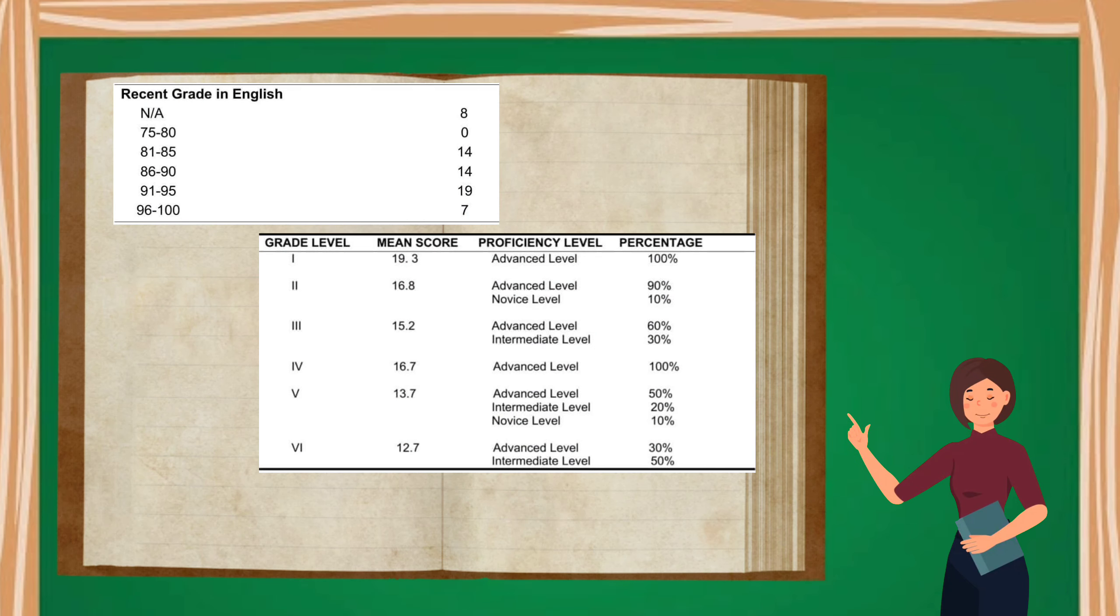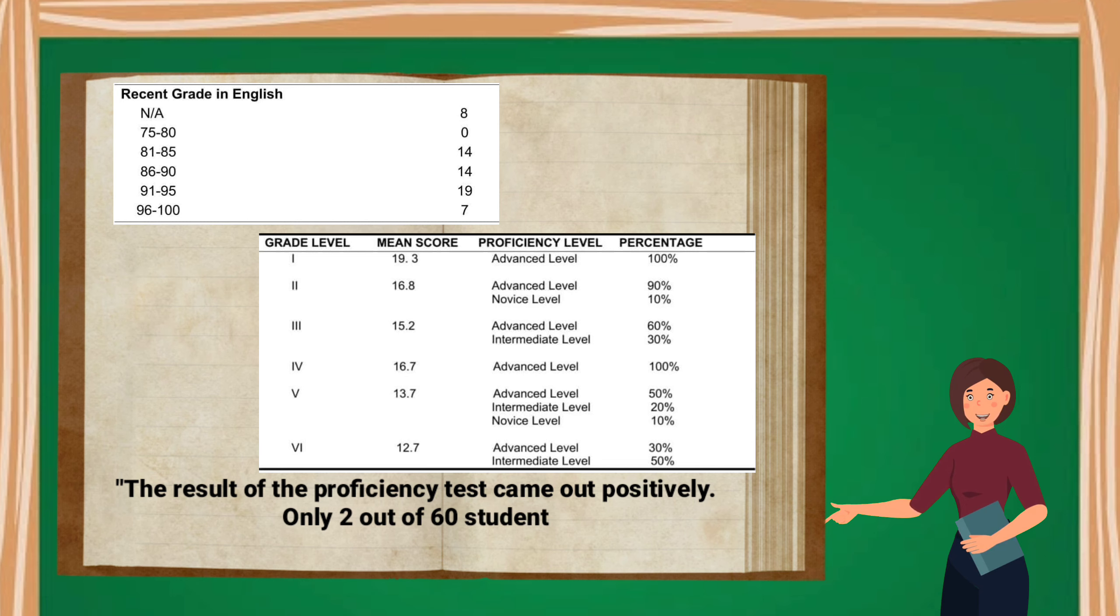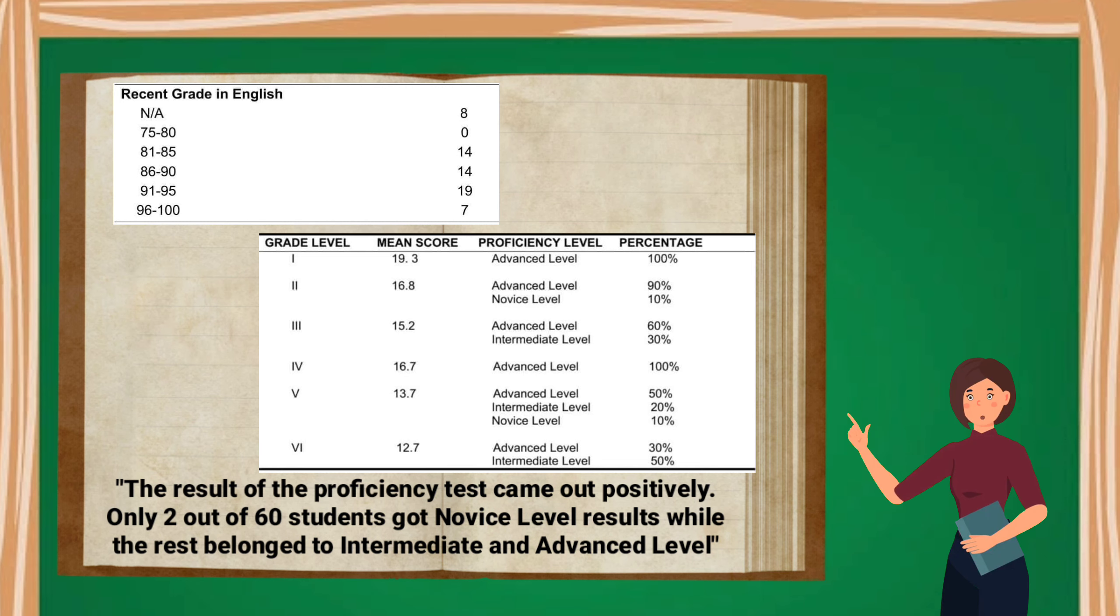The recent grades in English by the respondents were used as a basis in acknowledging their performance shown in the grammar proficiency test results. The results of the proficiency test came out positively. Only 2 out of 60 students got nervous results, while the rest belonged to intermediate and advanced level.